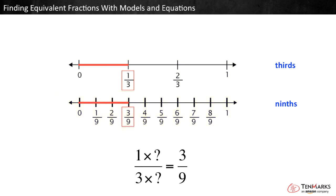What can we multiply one third by to make three ninths? To make ninths, each third was repartitioned into three equal parts. That means there are three times as many parts in the whole, and each piece is three times smaller. There are also three times as many parts shaded in the second number line as in the first. So, multiply one times three and three times three to get three ninths.